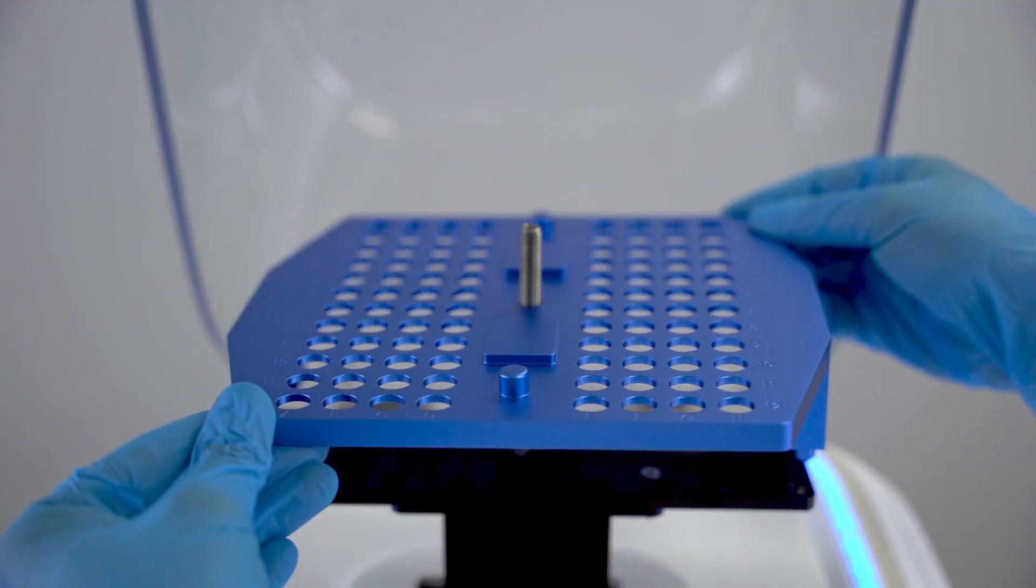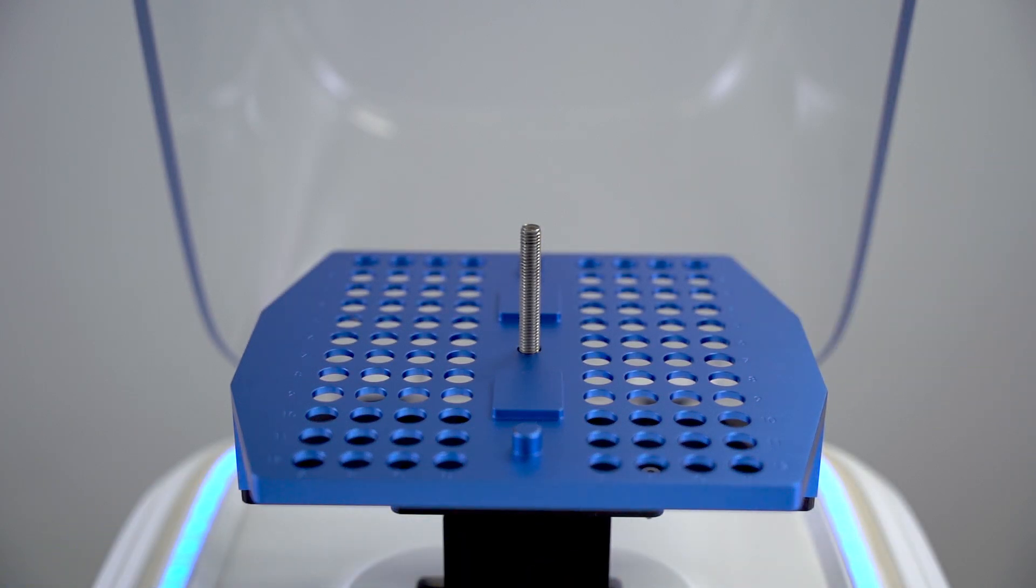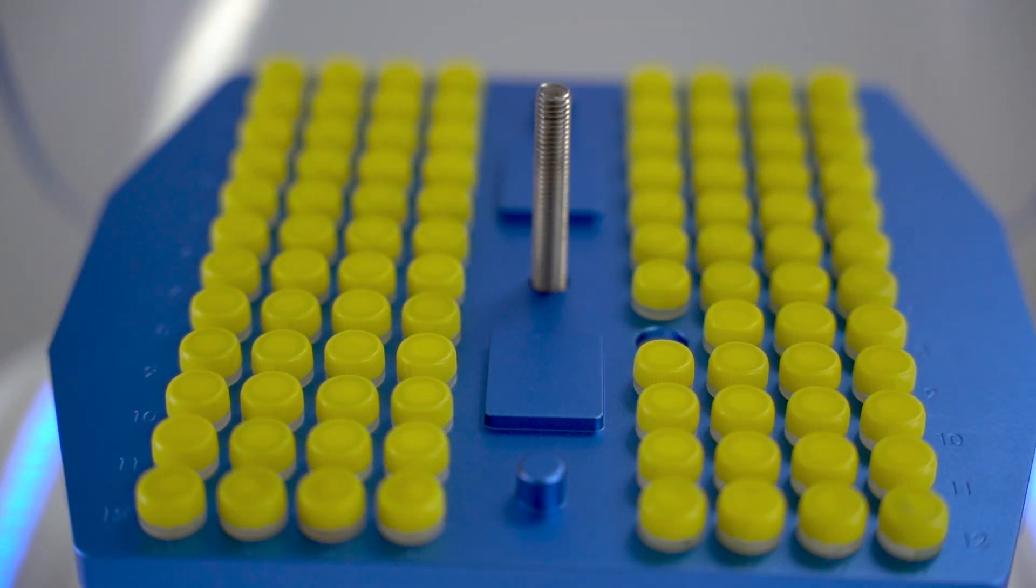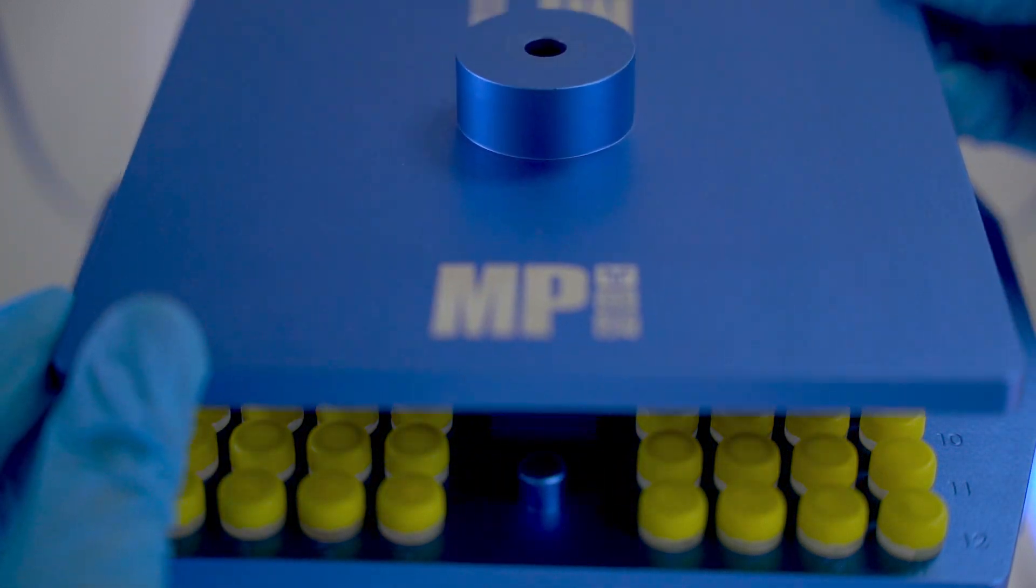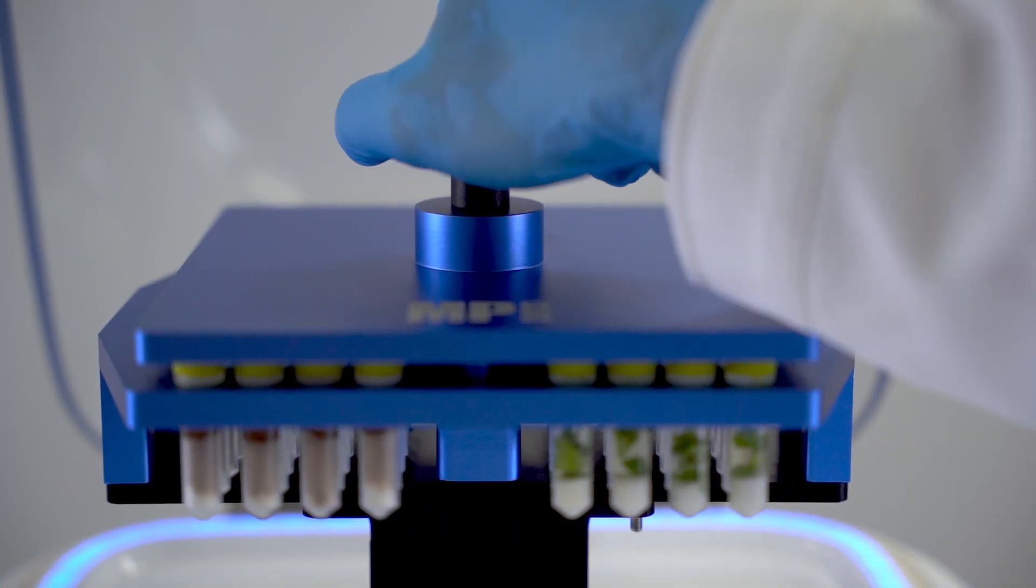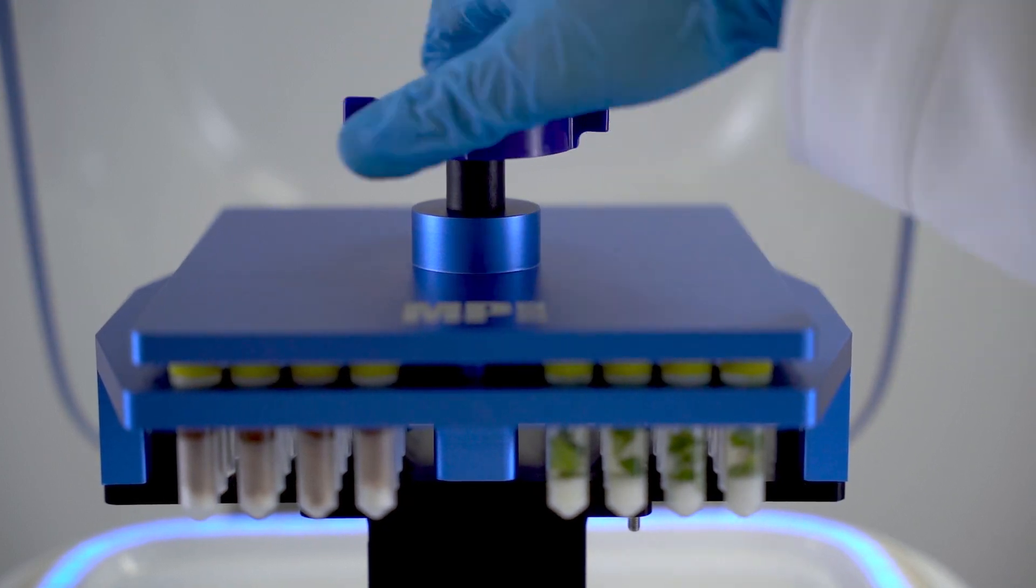Various types of adapters are available for your different applications. Please view them at www.mpbio.com. Load the samples into the adapter and put on the top plate. Place the blue ClickMaster on top of the rod and turn it clockwise until a distinct clicking sound is heard.